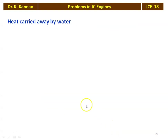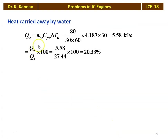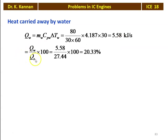Heat carried away by the cooling water: Q_w = M_w × C_pw × ΔT_w = (80 / (30 × 60)) × 4.187 × 30 = 5.58 kJ/s. As a percentage: Q_w / Q_s × 100 = 5.58 / 27.44 × 100 = 20.33%.